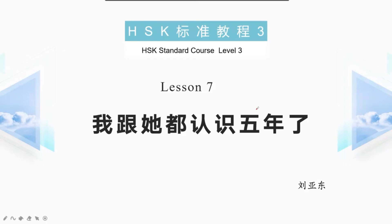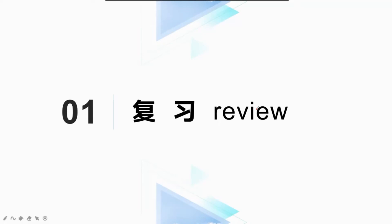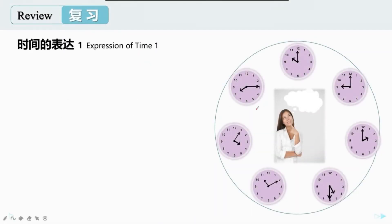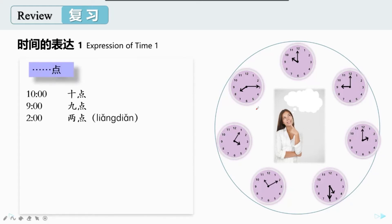首先，我们来一起回顾一下学过的关于时间的表达。如果你的朋友问，现在几点了，你该怎么回答？是的，你可以说现在十点了。那么这个时间又是几点呢？对，是九点。上午九点，你常常做什么？嗯，上课。一般来说，周一到周五工作日的时候，上午九点，我们是在上课的。那周末呢？周末的上午九点，你会做什么？我猜很多同学可能还在睡觉吧？